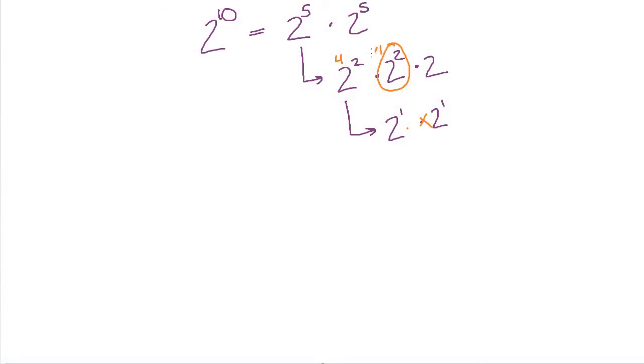So we can just say that this is 4 as well. And then we can times the 4 by the 4 by the 2 to get 4 times 4 is 16 and 16 times 2 is 32. So we get 32 as the answer here.